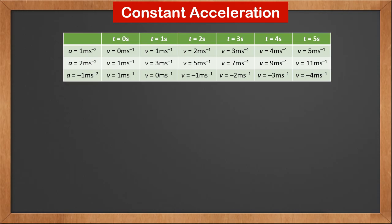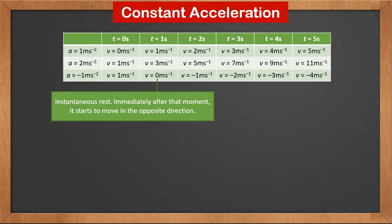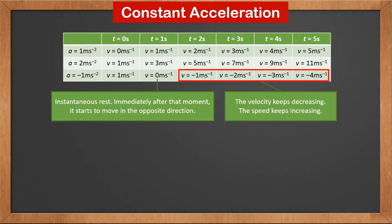Let's take a special look at when time is 1 second. The velocity is 0, meaning the object is at rest. In this case, the object starts with 1 meter per second and gets slower and slower. At time 1 second it comes to a stop — we call this instantaneous rest. Immediately after that moment, the object starts to move in the opposite, or negative, direction. From that moment on, the velocity keeps decreasing, but the speed, or the absolute value, keeps increasing. The object is actually moving faster and faster. So be careful: when an object's velocity keeps decreasing, it doesn't necessarily mean it moves more slowly, because velocity is a vector.